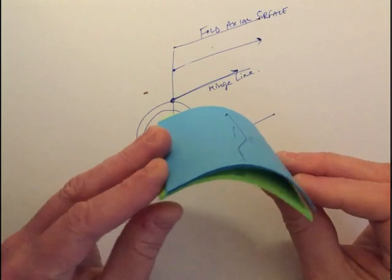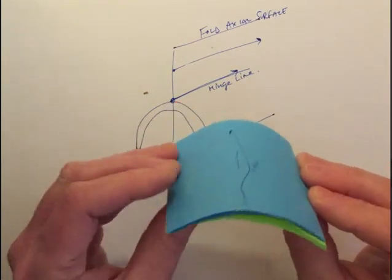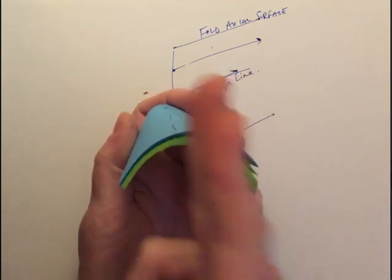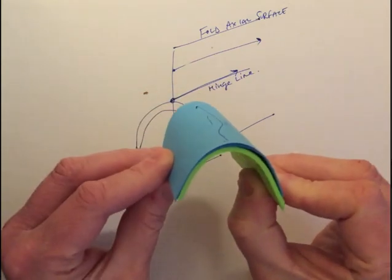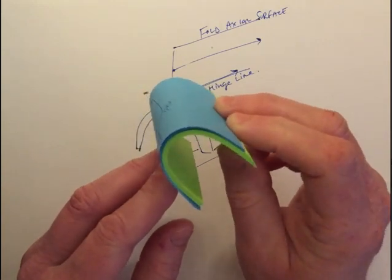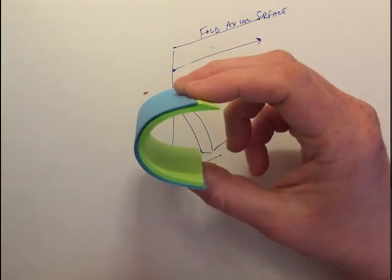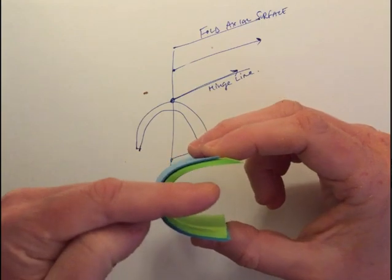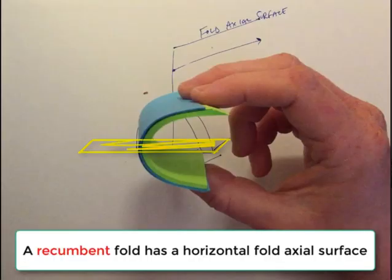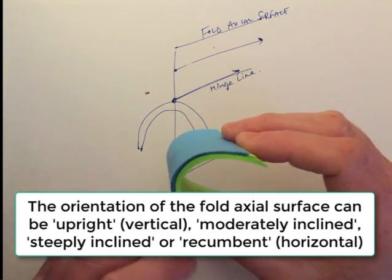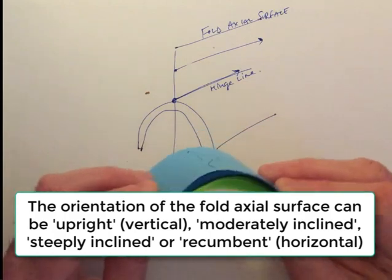In terms of our fold axial surface, that can also be oriented in different ways. It can be vertical, where this is running directly out towards you as the viewer, or that fold axial surface could be inclined a bit, or it could be inclined more, or it could be horizontal. So we have a fold that looks like this and we define this as a recumbent fold—the fold axial surface which is running through here is now horizontal. We can measure the orientation of the fold axial surface in the same way that we do any other planar surface in geology, using the strike and the dip direction.